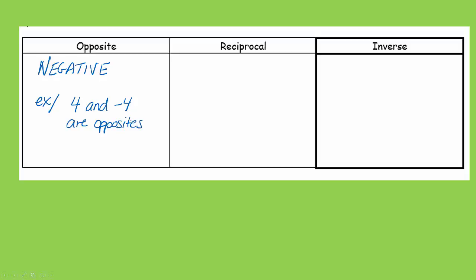The second word is reciprocal. And most of the time, I find that students are pretty good with this one. Reciprocal, I want you to think about fractions. And what that would mean is to flip the numerator and denominator. So for example, two-thirds and three-halves are reciprocals.